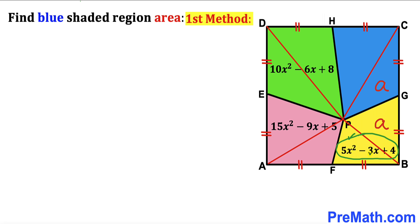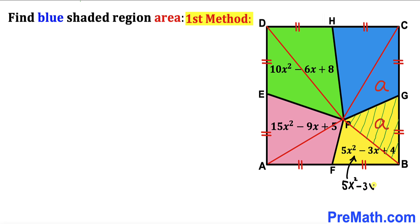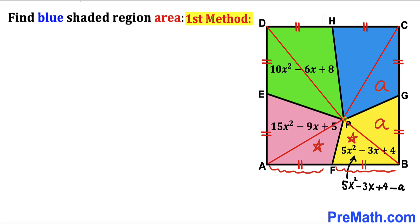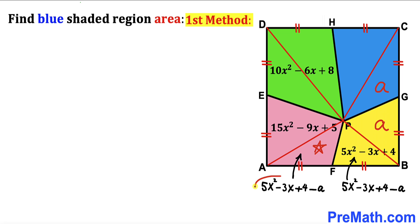The whole area of the yellow quadrilateral is 5x² minus 3x plus 4, and the inner part has area a, so the area of the yellow triangle on the other side is (5x² minus 3x plus 4) minus a. Now, the yellow triangle and the pink triangle share the same base and height at point P, so the area of the pink triangle is also (5x² minus 3x plus 4) minus a.